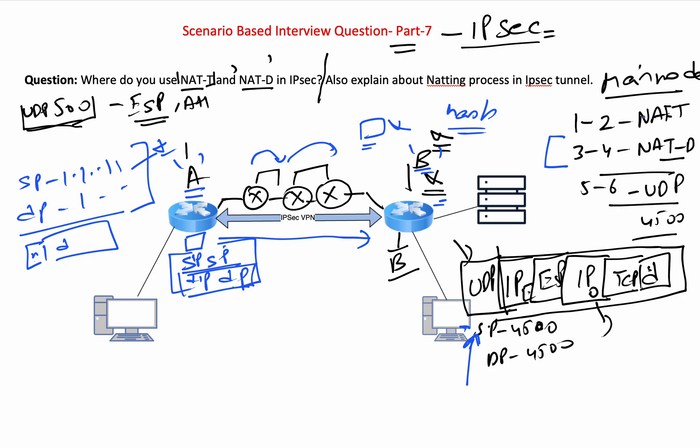Also explain about NATing process in IPsec tunnel. So you explained it side by side, stating that in the NATing process, the whole packet will be encapsulated by UDP 4500. Now they'll ask you why UDP 4500. Then in that case, you have to tell them why are we using UDP 4500. It is because ideally for IPsec tunnel we use ESP and we use port 500.